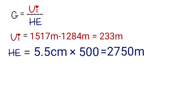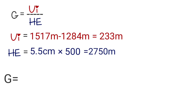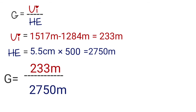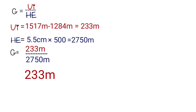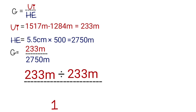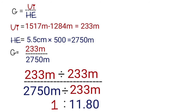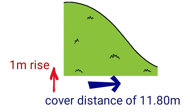Now write the formula: gradient equals VI (233 meters) over HE (2750 meters). Divide both sides by the VI: 233 divided by 233 equals 1, and 2750 divided by 233 equals 11.80. The final answer must be in ratio form. This means for every 1 meter you rise vertically, you cover 11.80 meters horizontally.